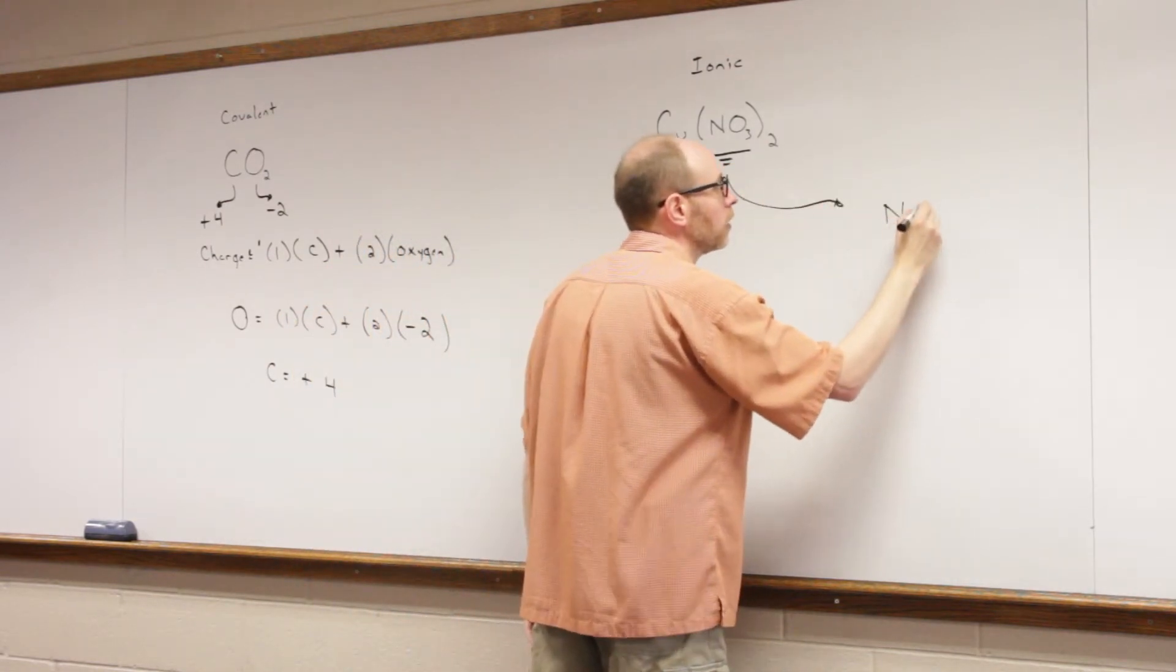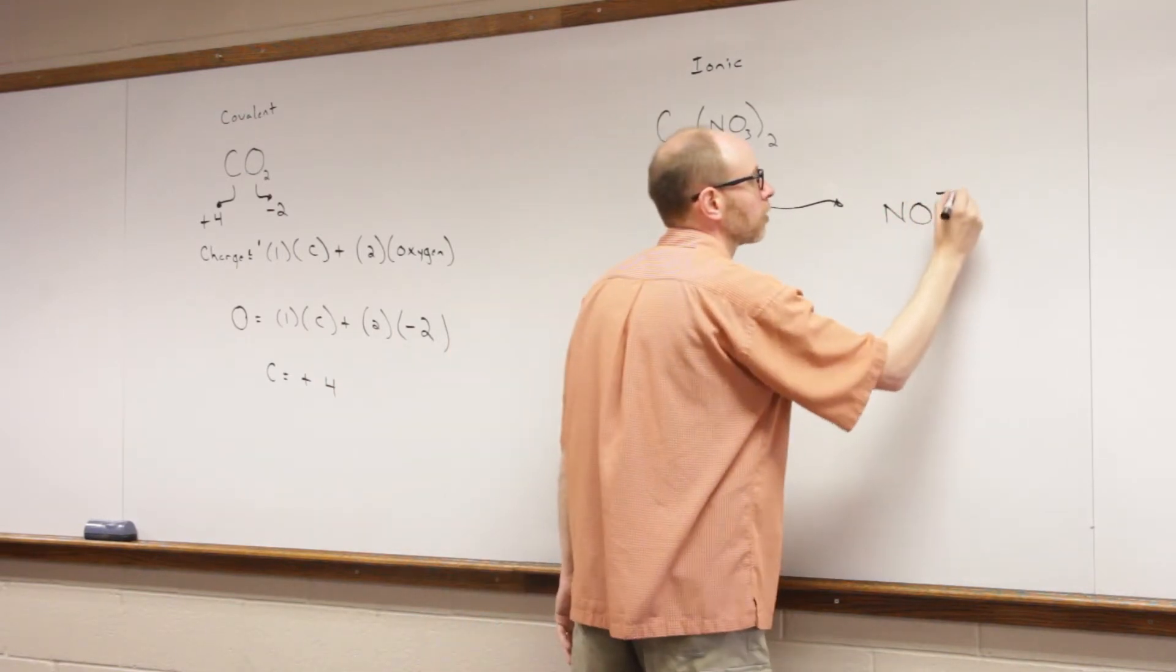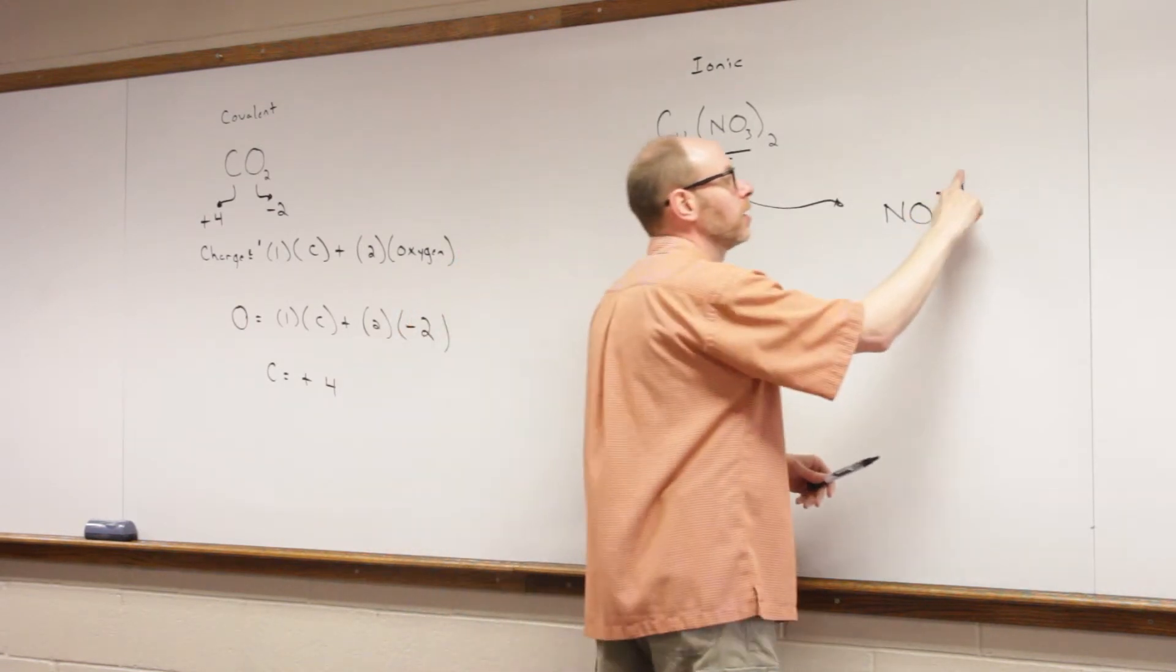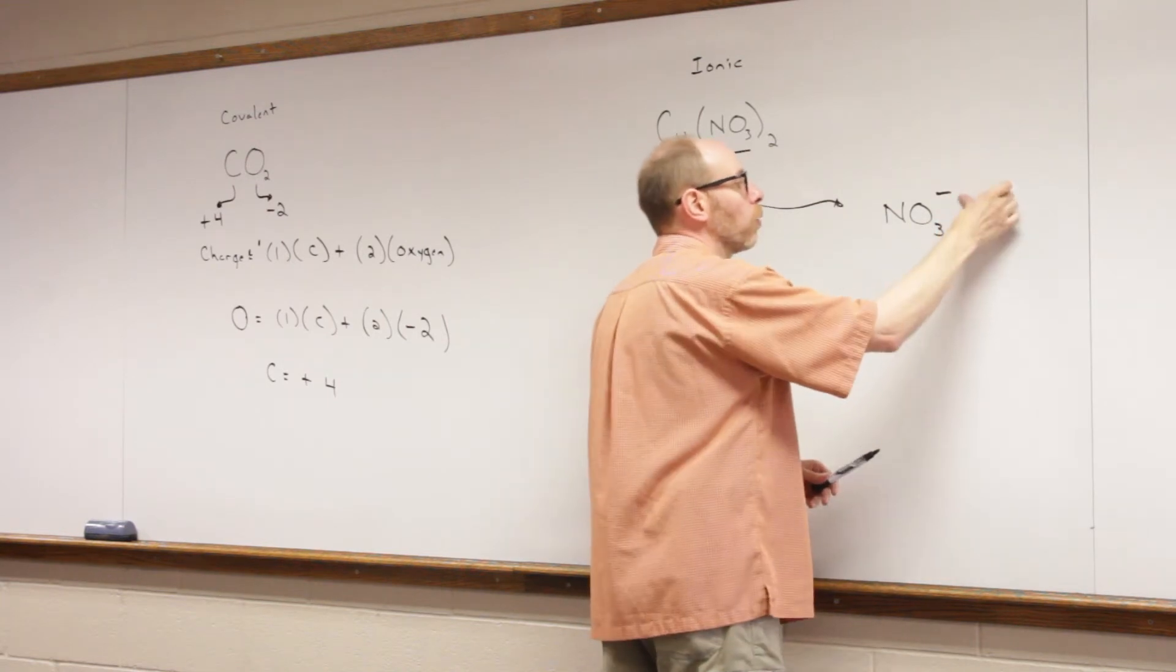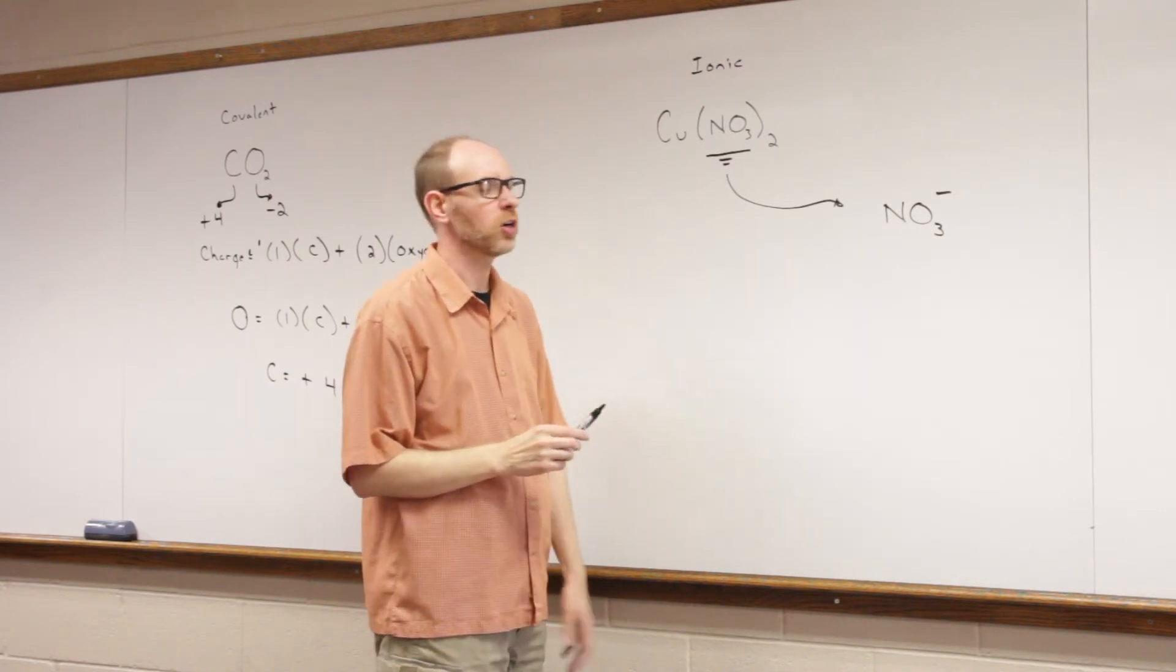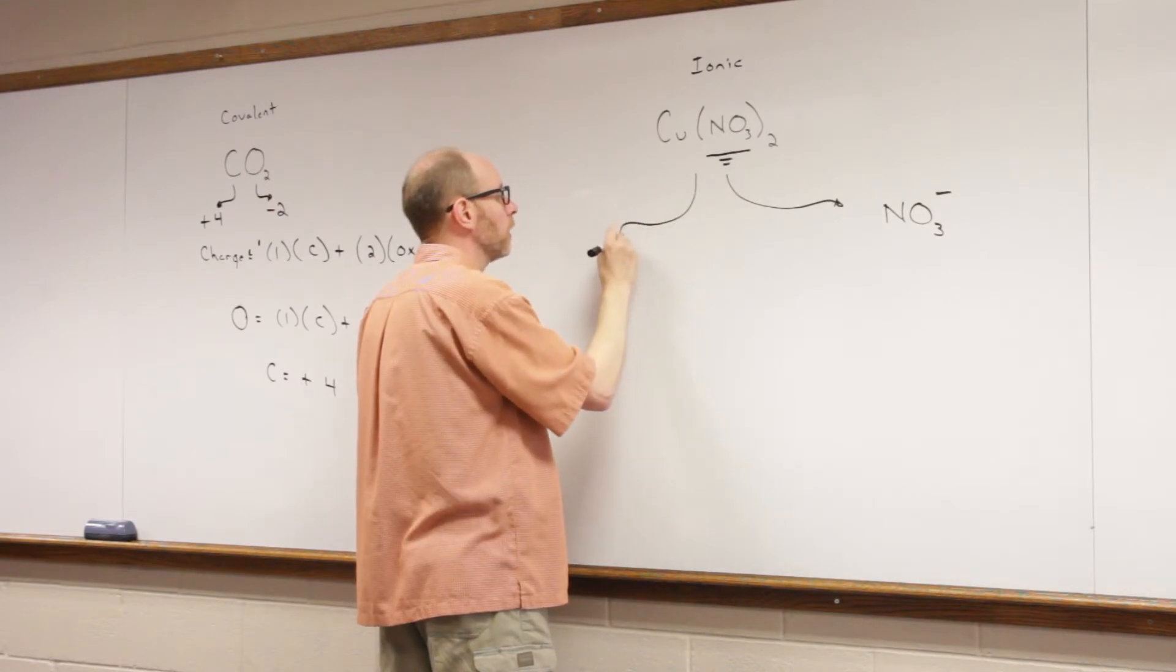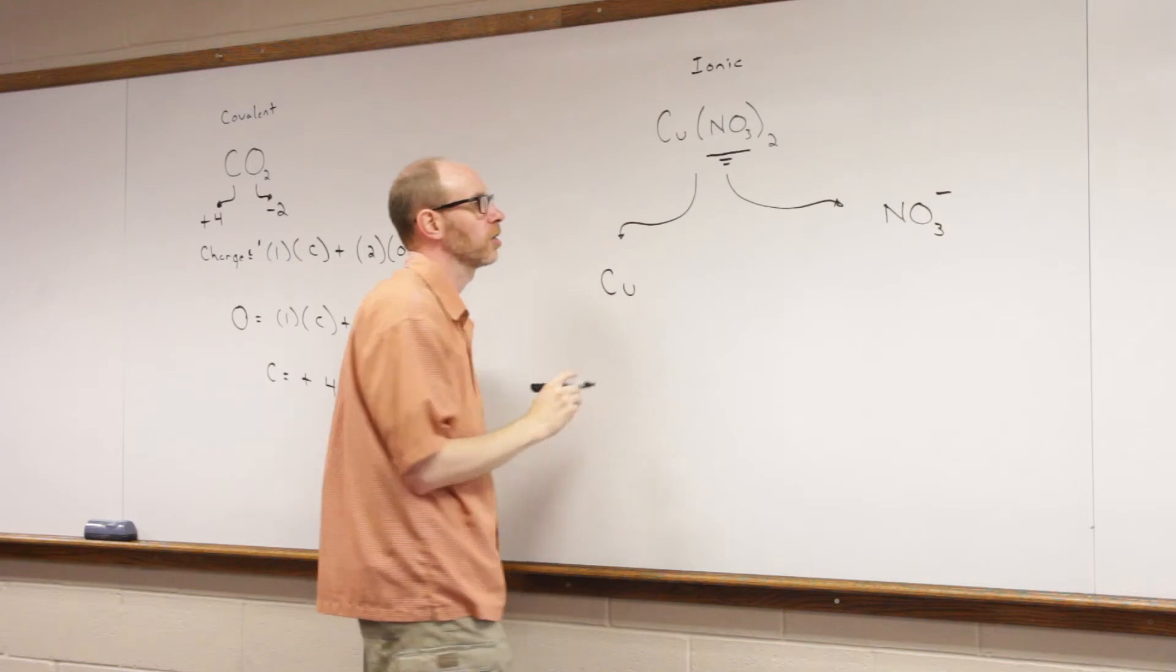So in this case, nitrate ion is NO3 minus 1. Now you might say, you never see it written like that. It's always just minus, because whenever we don't include that number there, what we are saying is that it is a minus 1. We don't normally put the 1 there, but we know that there's a charge. So therefore, what must the other ion be? What's the copper ion in this compound?